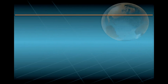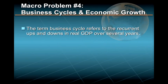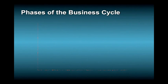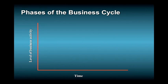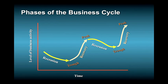Closely related to economic growth is the problem of business cycles. The term business cycle refers to the recurrent ups and downs in real GDP over several years. While individual business cycles vary substantially in length and intensity, all display common phases. As illustrated in this figure, the cycle looks like a roller coaster: there is a peak where business activity reaches a maximum, a trough brought about by a recessionary downturn in total output, and a recovery or upturn in which the economy expands toward full employment. Each of these phases oscillates around a growth trend line.